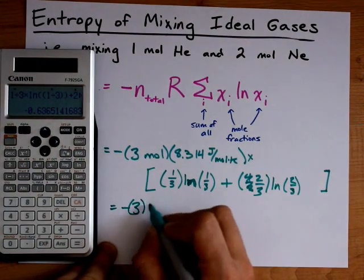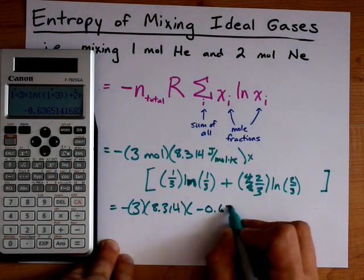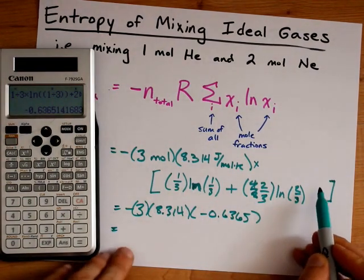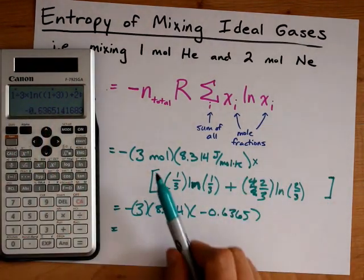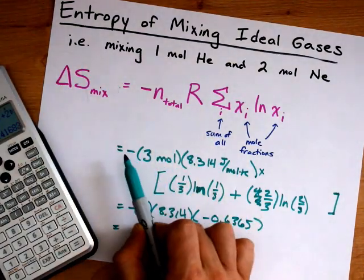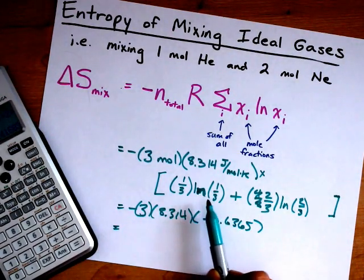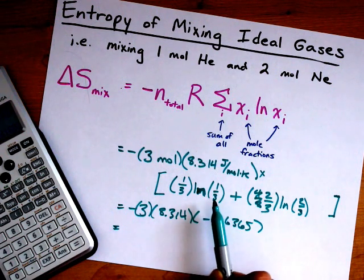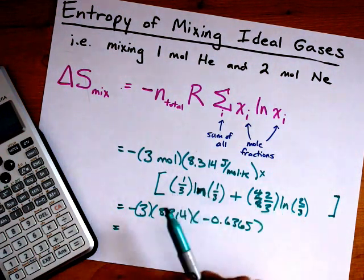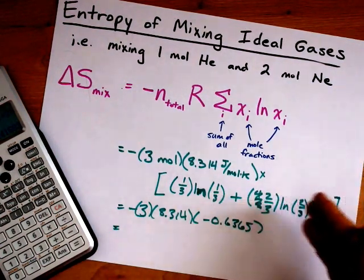Negative 3, 8.314, negative 0.6365. You will always get a negative number for this sum, because we expect the entropy to increase, thus this is positive, and we need something to cancel with this negative. But more importantly, taking the natural logarithm of anything less than one will always give a negative number. Now, because we're adding them all together, it's just a small negative number plus another small negative number, and you end up with another small negative number.